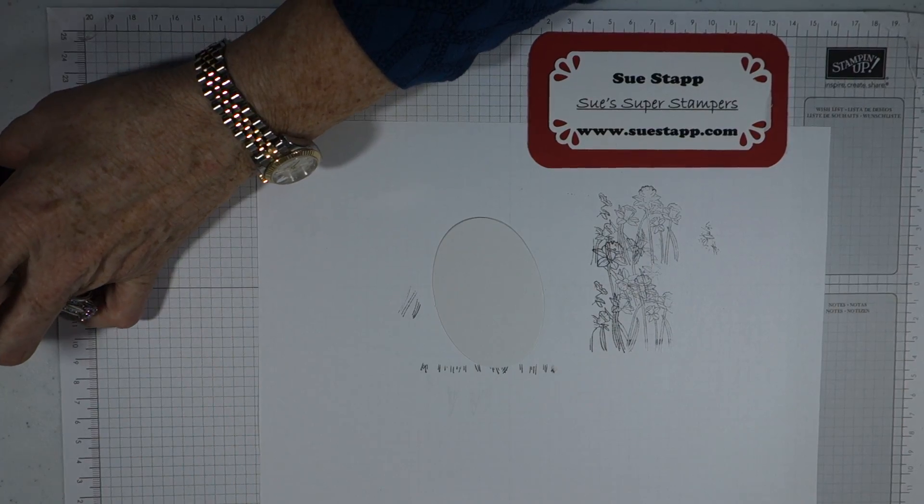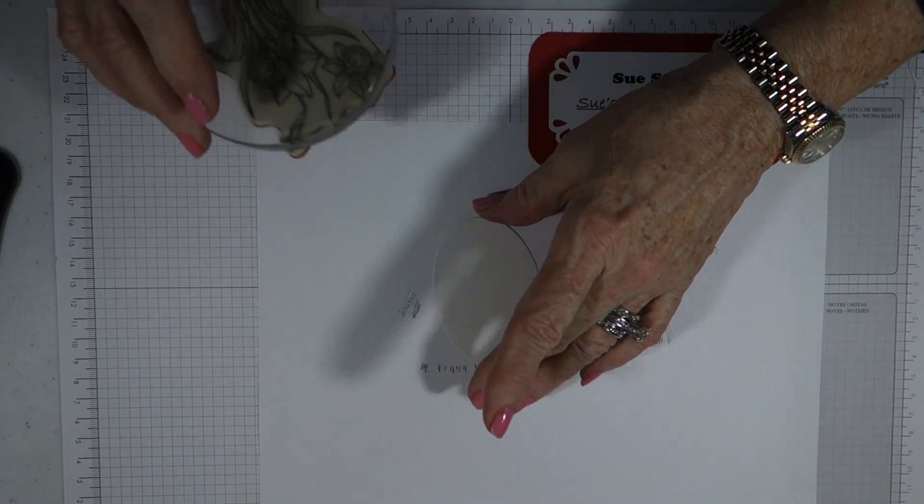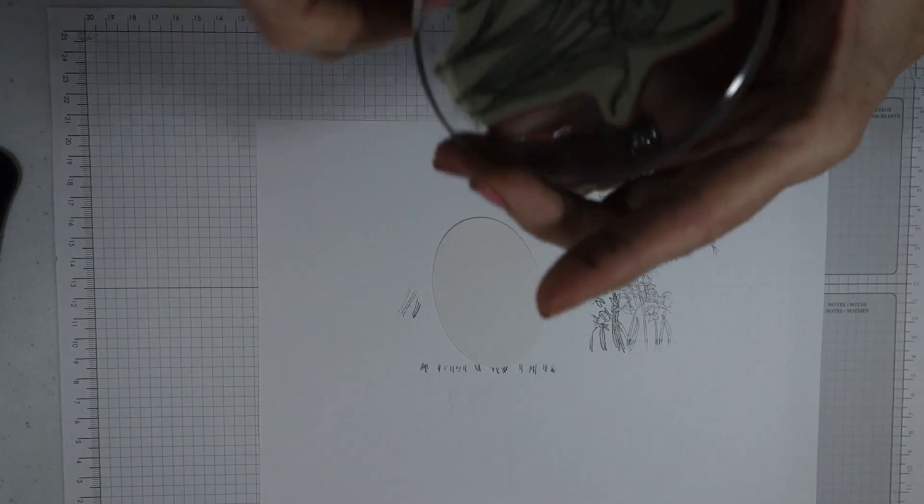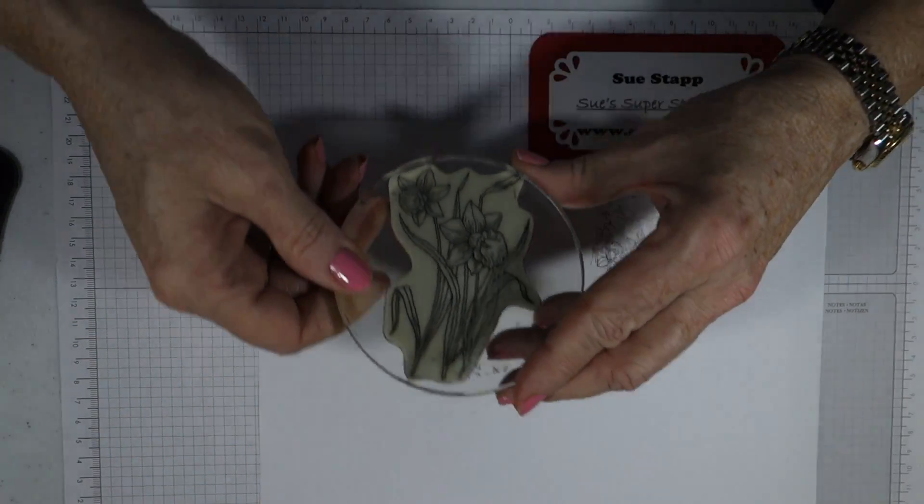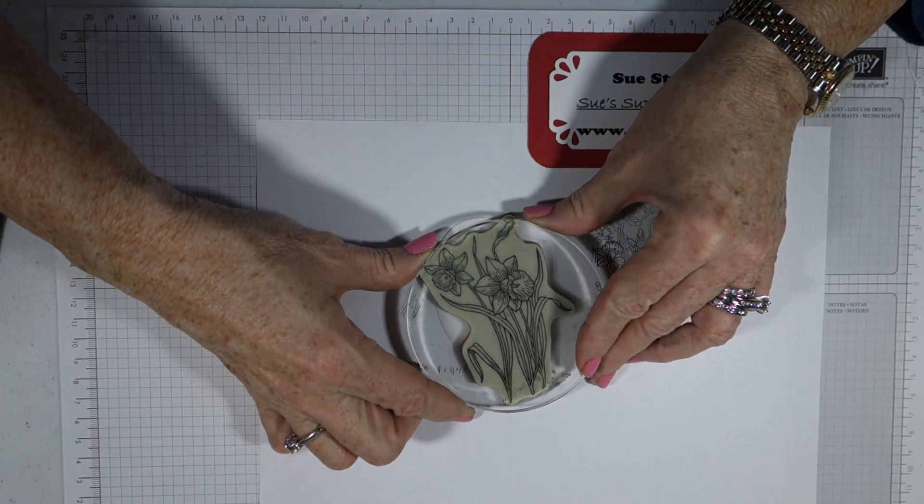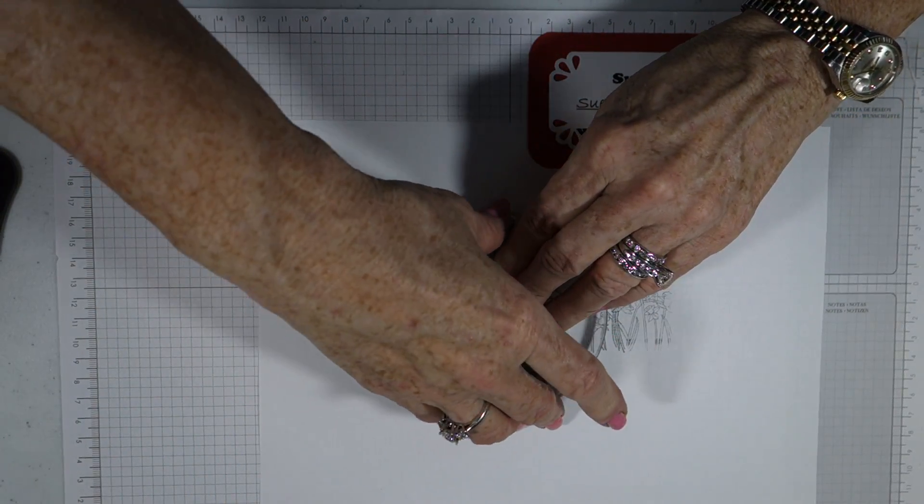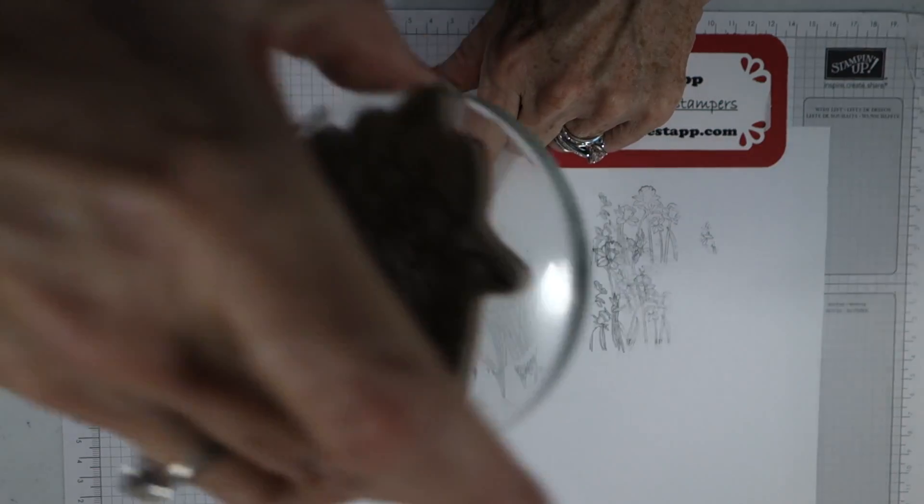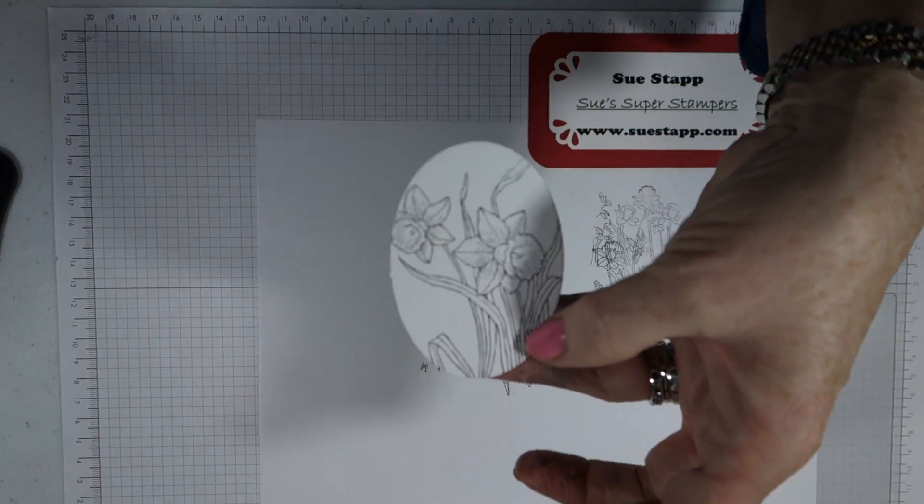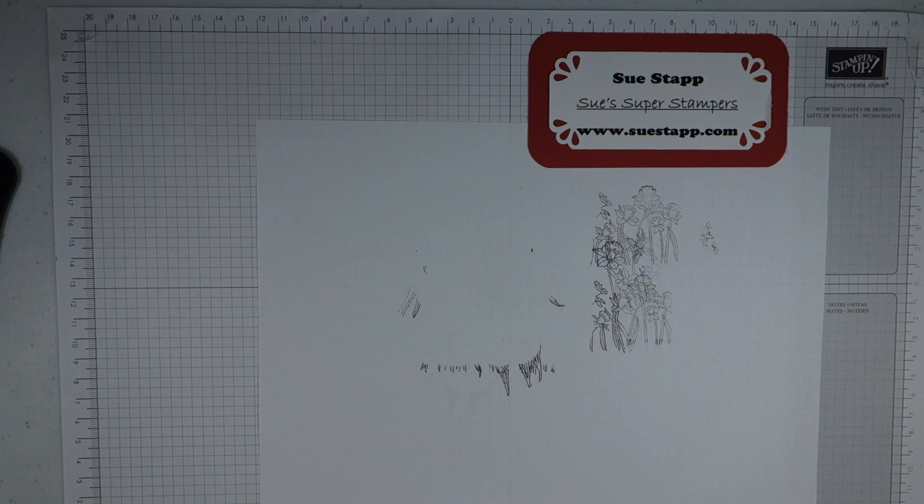And the other one that we're going to stamp is our oval. We're going to stamp that with the large daffodil, and I'm still using the same Memento black ink because I am going to be using the watercolor markers on that also. I'm going to pop that straight down. I like to press it for five seconds or so, let the ink adhere to the paper, and you get a really nice image.